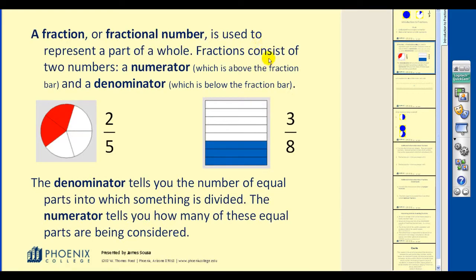A fraction or fractional number is used to represent a part of a whole. Fractions consist of two numbers, a numerator, which is above the fraction bar, and a denominator, which is below the fraction bar. The denominator tells you the number of equal parts into which something is divided, while the numerator tells you how many of these equal parts are being considered.